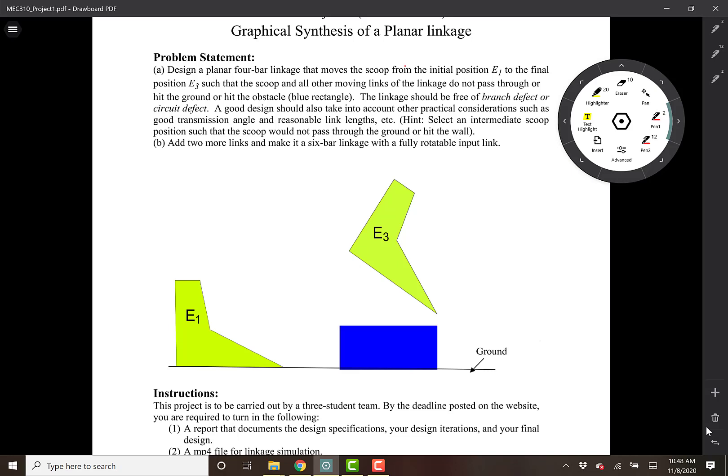The linkage should be free of branch defect or circuit defect. This is a more important constraint. You have to evaluate your mechanisms and make sure that there is no circuit defect first because if there is a circuit defect, the mechanism becomes unusable.